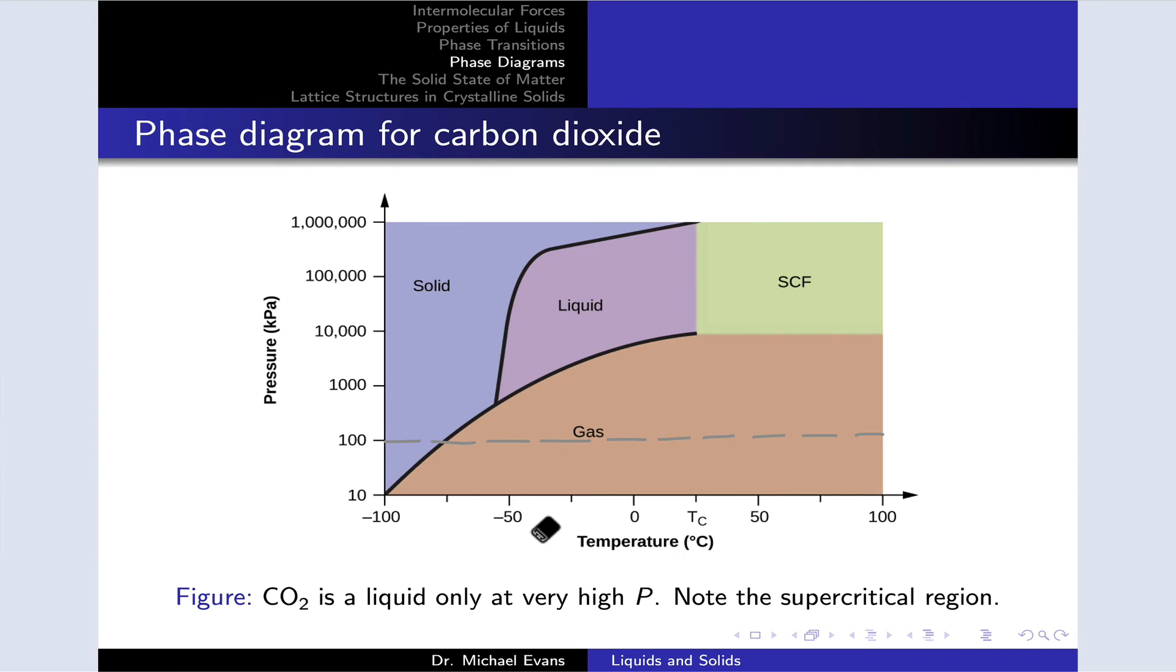This slide shows a phase diagram for carbon dioxide, which also has some unique features. One unique feature is that there is a solid-gas phase boundary. At some temperatures and pressures, including typical pressures around one atmosphere, the solid sublimes directly to gas. There is no transition through a liquid phase at relatively low pressures. The liquid phase of carbon dioxide only exists at relatively high pressures.